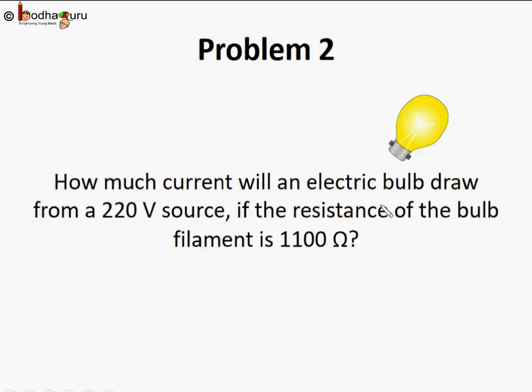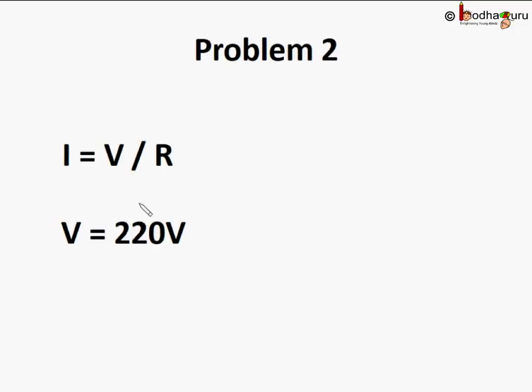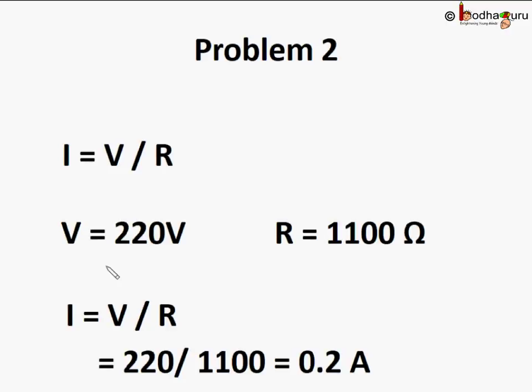Let's do the same problem but with an electric bulb. How much current will an electric bulb draw from a 220 volt source if the resistance of the bulb filament is 1100 ohms? We are given V = 220 volts, R = 1100 ohms, and we need to find I. We know I = V/R, so I = 220/1100 = 0.2 amperes. So 0.2 amperes of electric current is passing through the bulb filament.